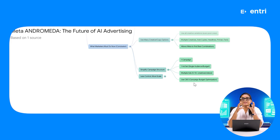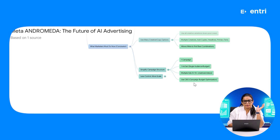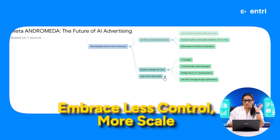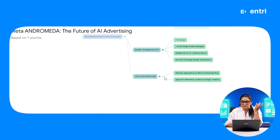We now have a campaign, an ad set, and multiple ads. In the campaign structure, we can use CBO. If you have any comments about CBO and ABO, please request a detailed video. The conclusion is: less control equals more scale. We can no longer manually create complicated targeting setups — we need to concentrate on the creative side and the content side.